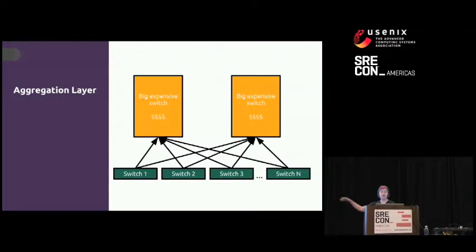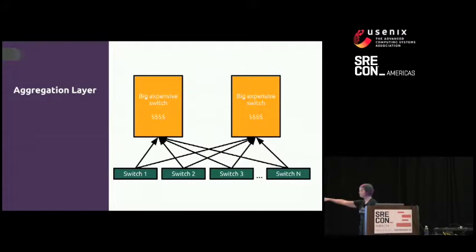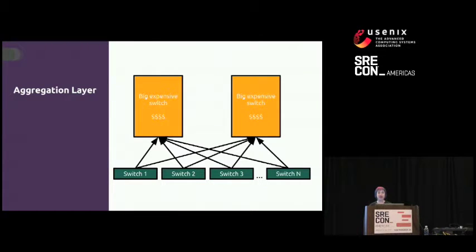These network switches will all go up to an aggregation layer. This diagram shows you what people were doing in the recent past, but you can still find this in many networks. Each rack switch would connect up to two to four core switches or large centralized switches. On the good side, this kind of architecture is really easy to understand. Your traffic will go from switch one up to the core switch, back down to switch two. On the bad side, those big expensive switches are really expensive — anywhere from $100,000 to $400,000 each. And they really limit network bandwidth, because you only have those one or two paths. Nowadays, those middle switches are often replaced with what I like to call a redundant array of inexpensive switches, or CLOS.